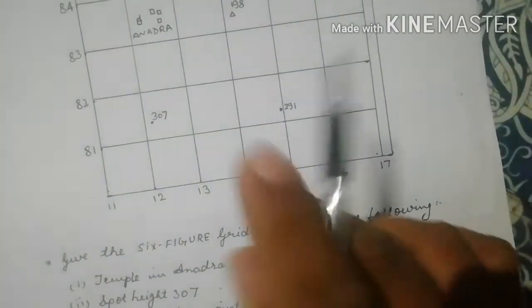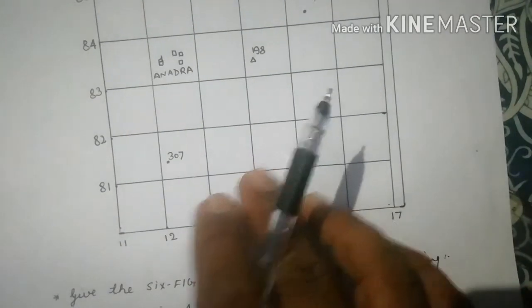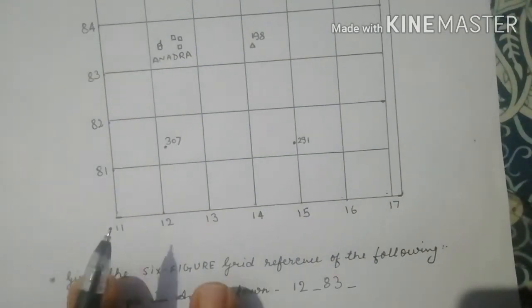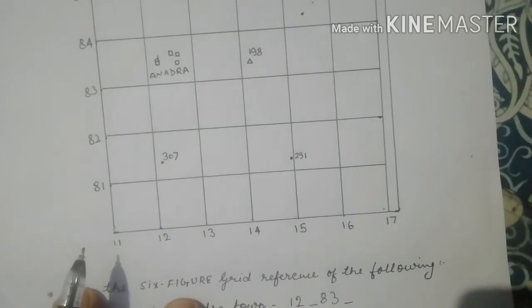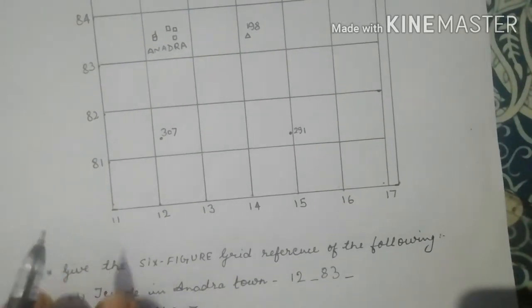Let me tell you about how to find out six-figure once again. In the previous video I've already told you to find out the four-figure grid reference. Be sure that you have actually seen that particular video. If you have not, go back and watch it.